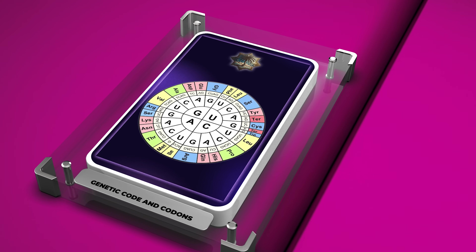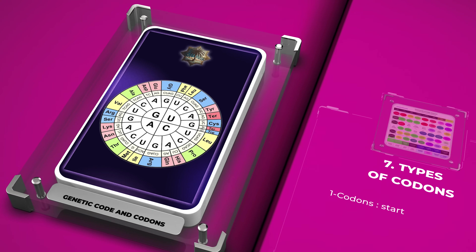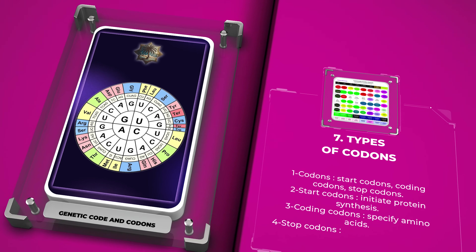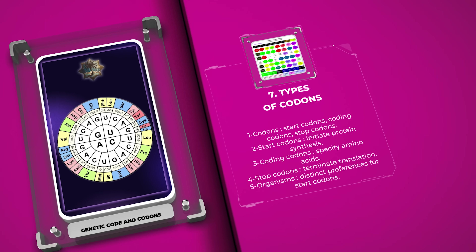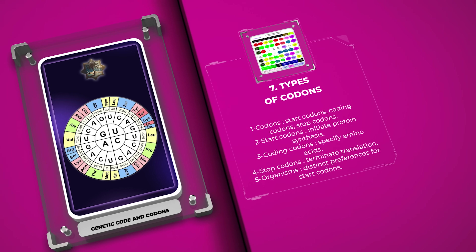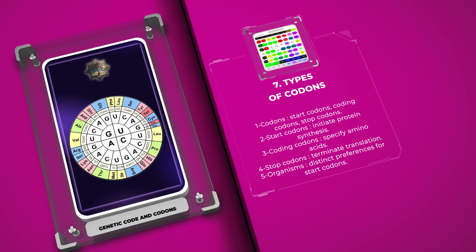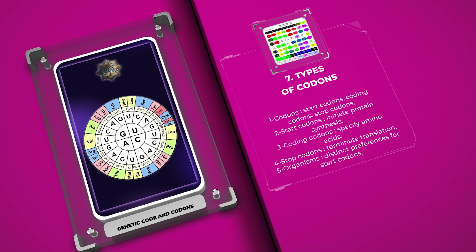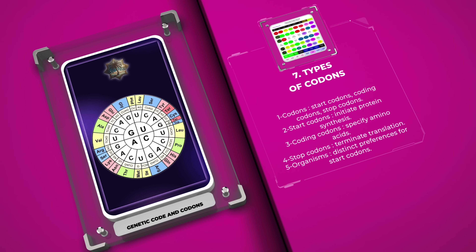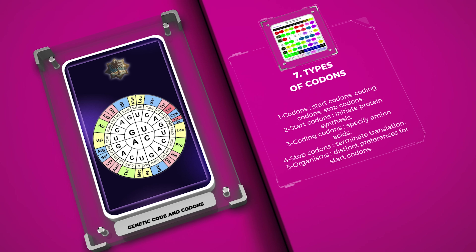Codons are categorized into start codons, coding codons, and stop codons. Start codons initiate protein synthesis, coding codons specify amino acids, and stop codons terminate translation. Different organisms have distinct preferences for start codons, with AUG being common in eukaryotes and archaea, while AUG, GUG, and UUG are utilized in bacteria. Coding codons correspond to specific amino acids, while stop codons signal the end of translation. Stop codons do not code for amino acids; instead, they interact with release factors to dismantle the ribosome and free the synthesized protein.